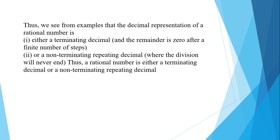We see from the examples that the decimal representation of a rational number is either a terminating decimal, where the remainder becomes zero after a finite number of steps, or a non-terminating repeating decimal.